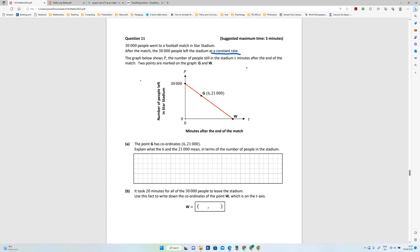So W is when the stadium is empty again. This is the minutes after the match, and this is the number of people. The point G has coordinates (6, 21,000). Explain what the six and the 21,000 mean in terms of the number of people. So the six means...